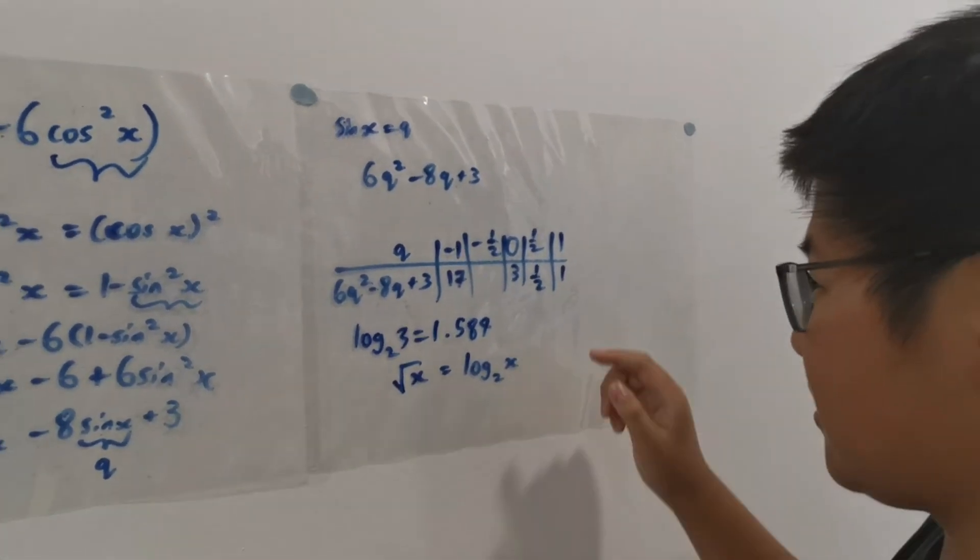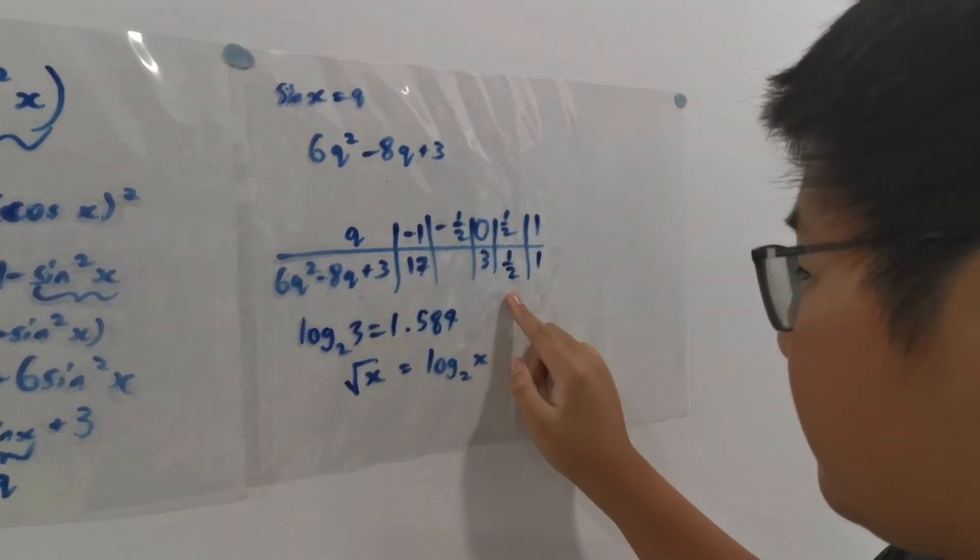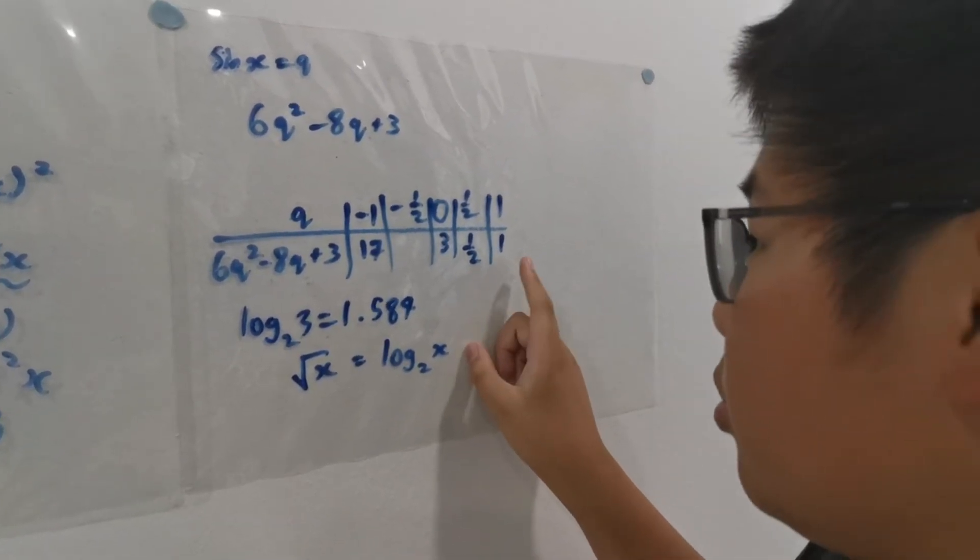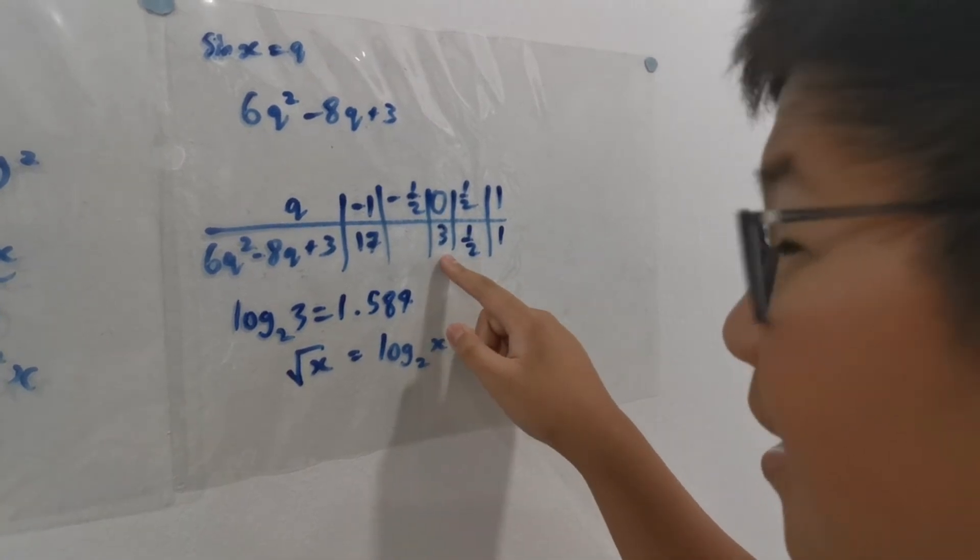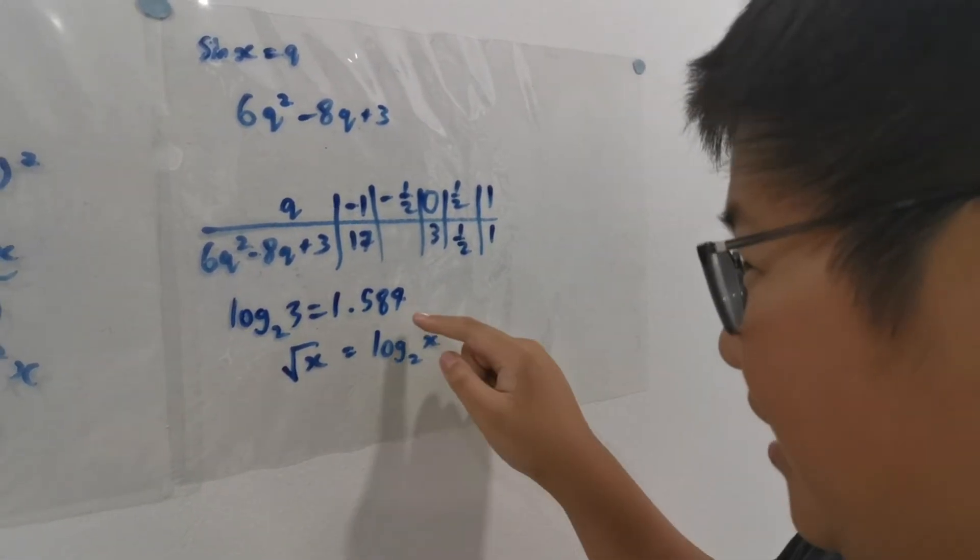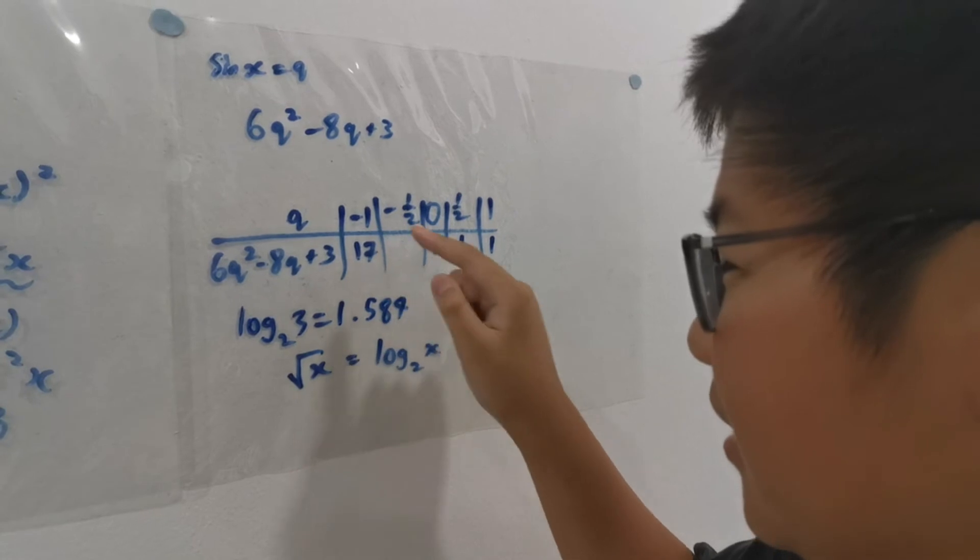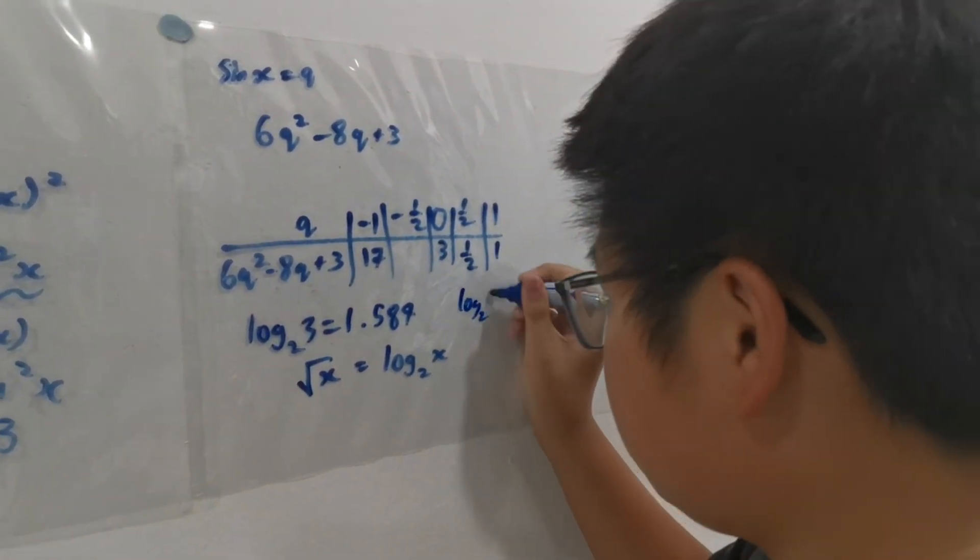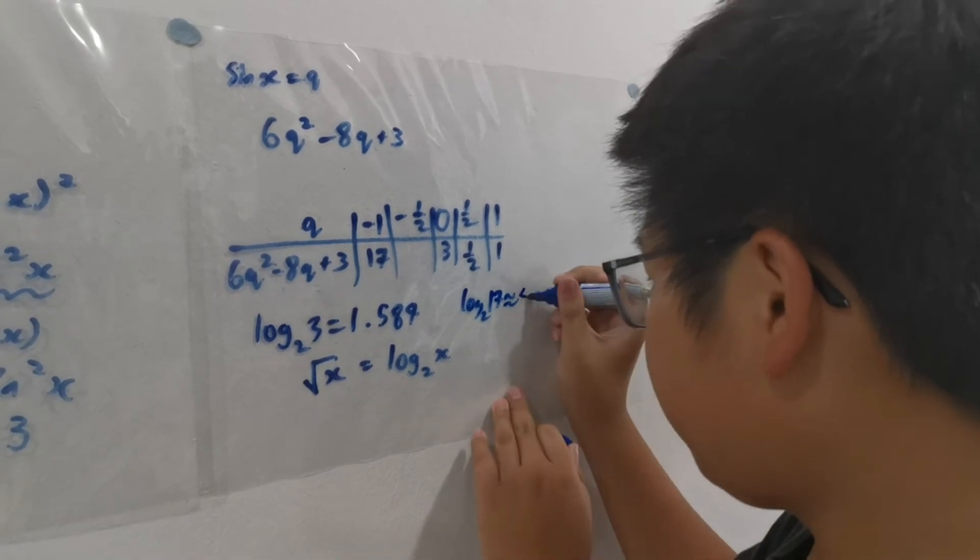Since it only takes values from half, because half returns a negative value when put in log 2, 1 returns 0, 3 has a positive value which is already here, and 17 returns an even bigger positive value. So log 2 of 17 is approximately 4.1.